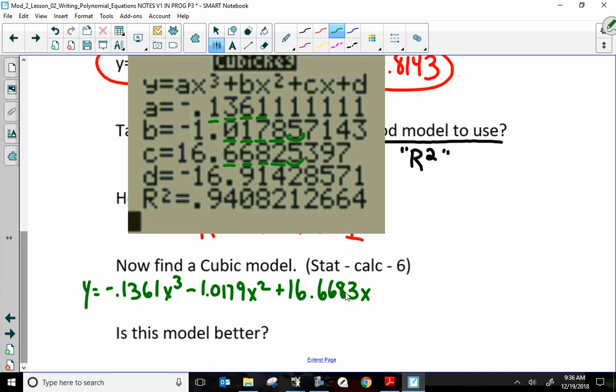Plus d, which is negative. Minus 16.9142. That 2 will round up to a 3 as well because the number after it is 5 or bigger. It's 8. So, it is 9, 1, 4, 3. My goodness gracious. There it is.